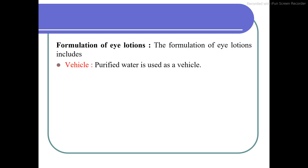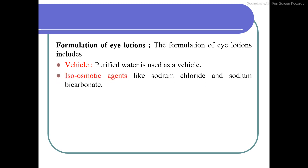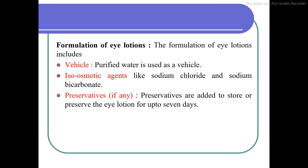The formulation requirements of eye lotion: the first requirement is the vehicle. Purified water can be used as a vehicle to prepare the eye lotion. The second and most important requirement is an isotonic agent or isosmotic agent — that is sodium chloride and sodium bicarbonate. By adding the required amount of NaCl and sodium bicarbonate, you can adjust the tonicity of your lotion. The third requirement is a preservative, if required. If it is really necessary, then only we can add the preservative.